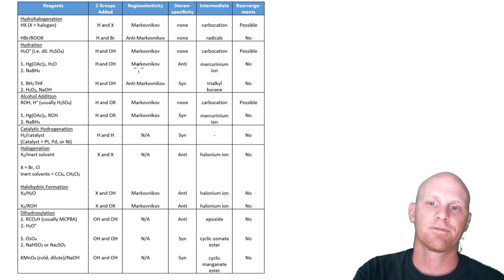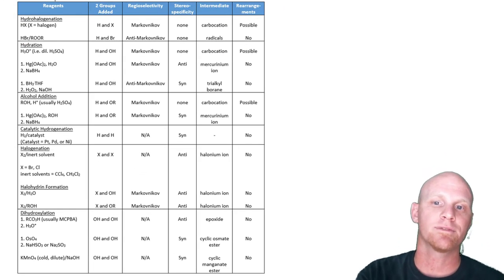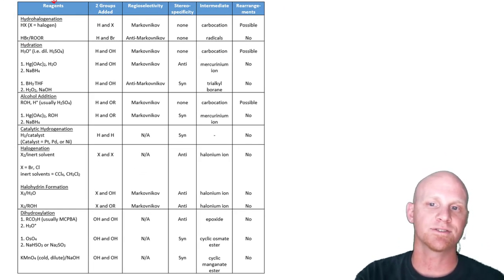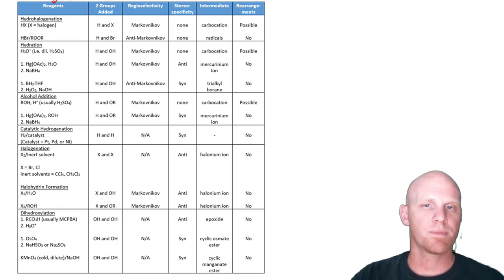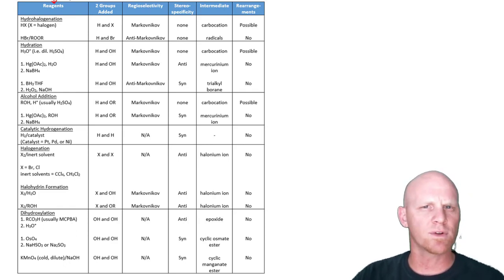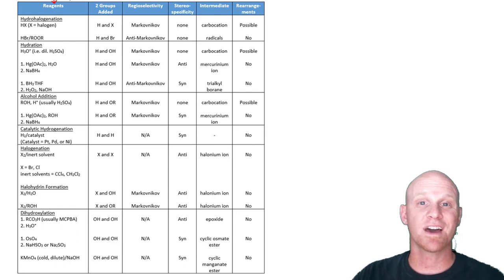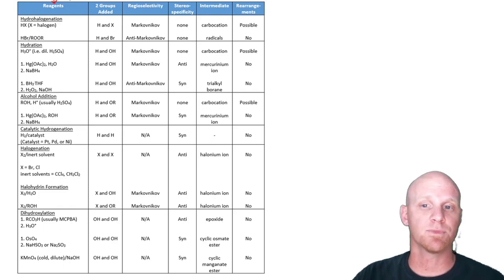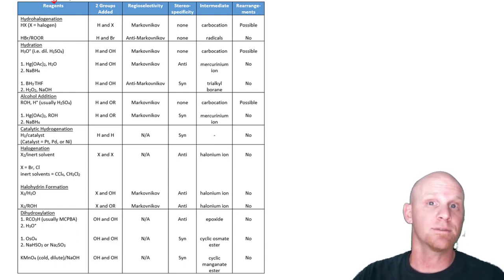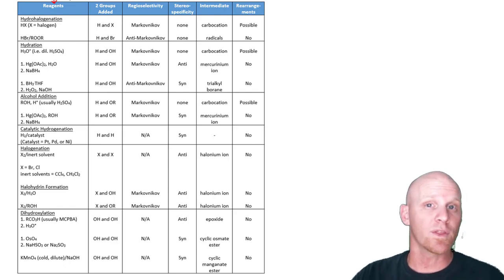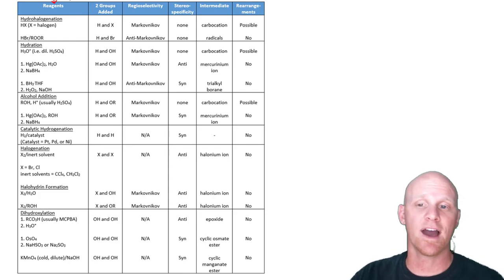In the first column here, I've listed all the different sets of reagents. A lot of students just think, how do I predict the products? And I just look at the reagents to try and figure out what's getting added. The key is you've only got about 10 or 12 different sets of reagents that are possible, and you're going to need to memorize every single one of those sets. That way you know exactly what's getting added.